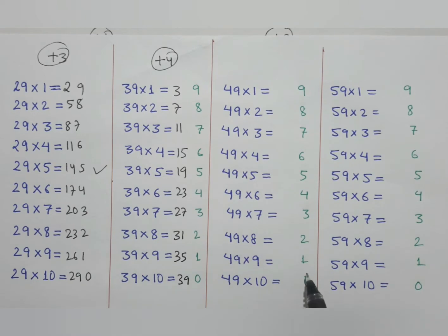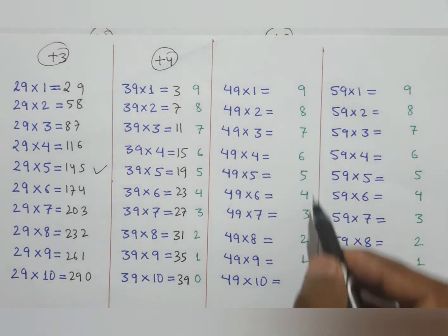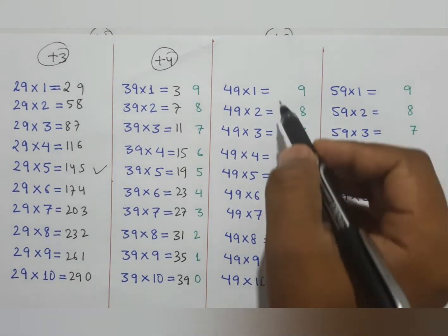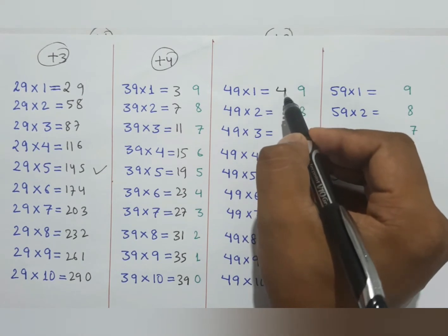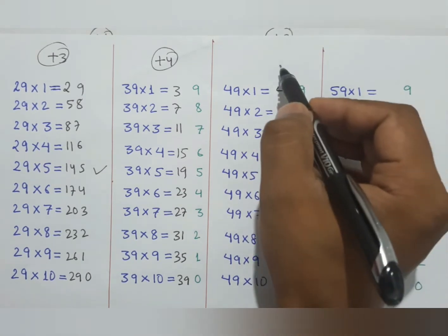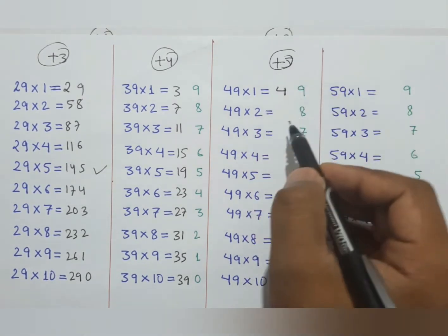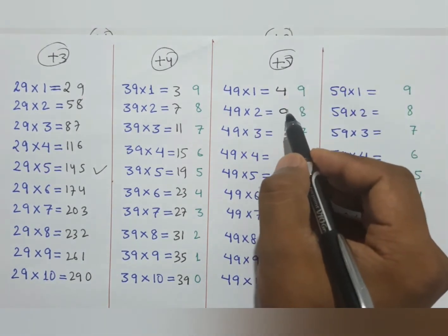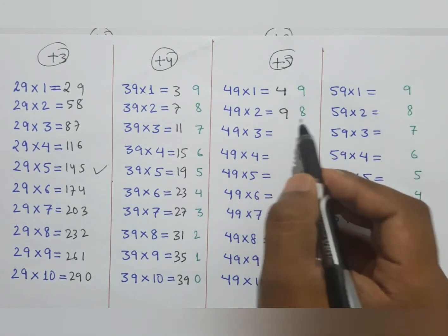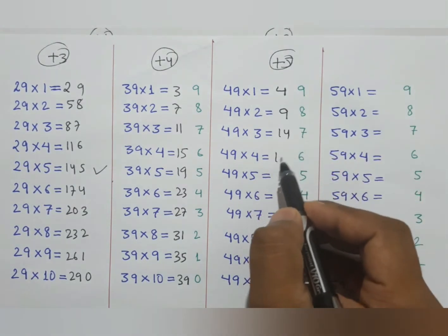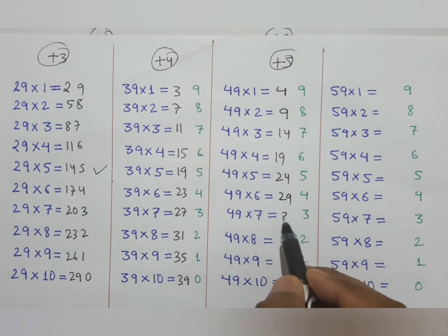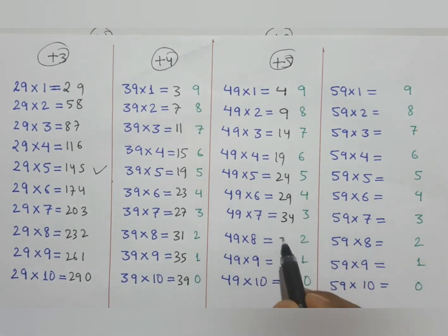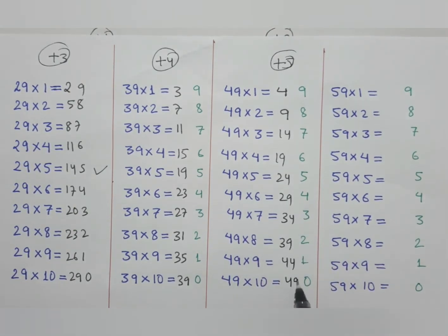Similarly, for the 49 table: the unit digit side is already 0 through 9. The left side starts from 4 and we add plus 5 each time: 4, 9, 14, 19, 24, 29, 34, 39, 44, 49.